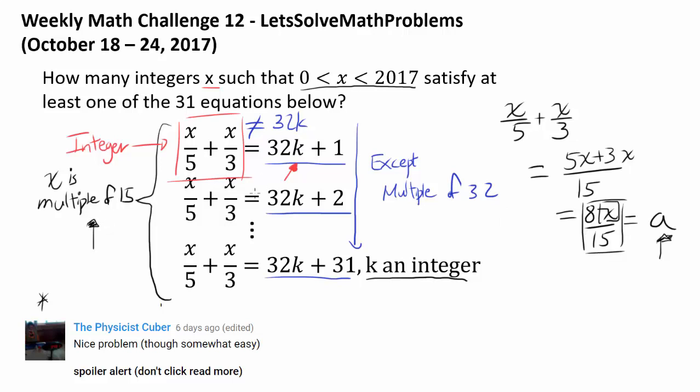And another thing to realize, since x is a multiple of 15, you can say x is 15 times u. So let's plug that in into the equation. So we have 15u over 5, I'm just plugging in 15u into x, which gets us 3u plus 15u over 3 gets you 5u. And you know this thing has to be 32k plus 1, 32k plus 2, all the way to 32k plus 31.